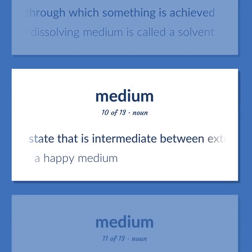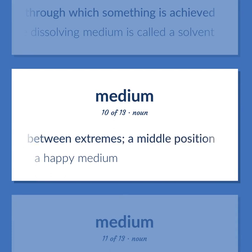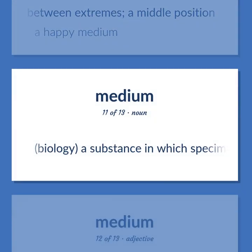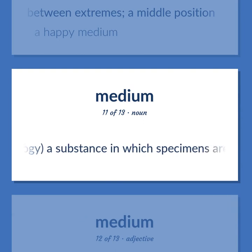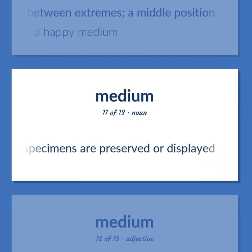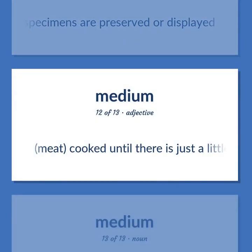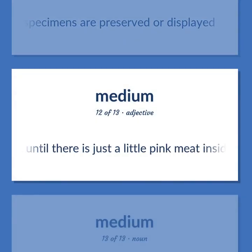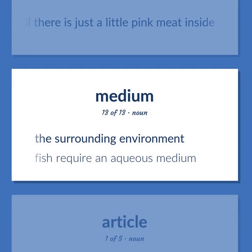Medium (noun): A state that is intermediate between extremes; a middle position. Example: A happy medium. In biology: a substance in which specimens are preserved or displayed. Meat: cooked until there is just a little pink meat inside. Also: the surrounding environment. Example: Fish require an aqueous medium.